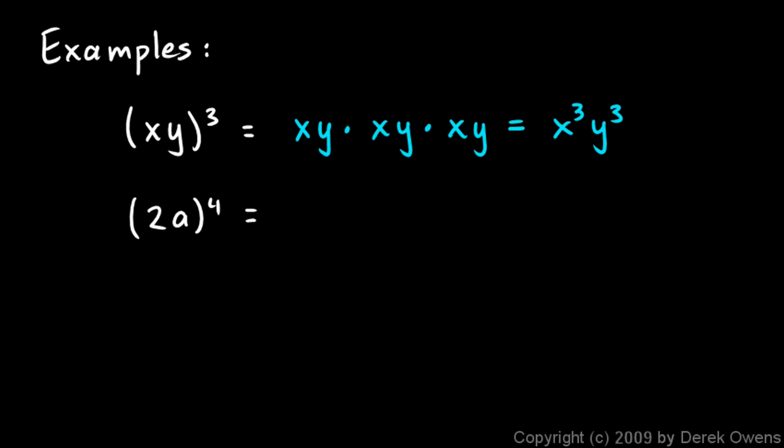And the same thing will happen down here. 2a to the power of 4. That's going to equal 2a times 2a times 2a times 2a, which will be 2 to the 4th times a to the 4th. And we could simplify that as 16a to the 4th, because 2 to the 4th is 16. But the point here is to understand this: we had 2a raised to the power of 4, and both the 2 and the a ended up getting an exponent of 4.